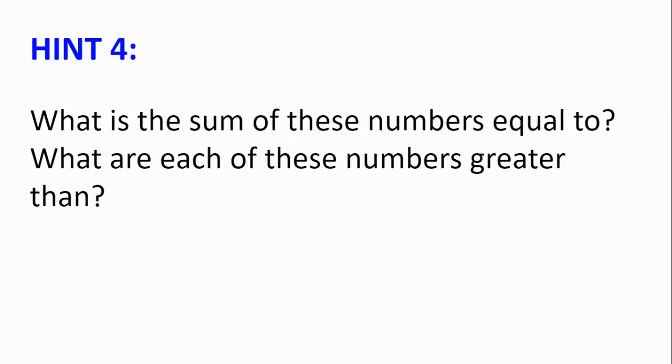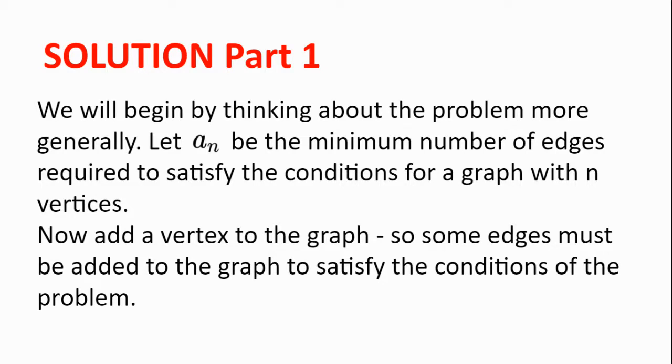Hint number 4. What is the sum of these numbers equal to? What are each of these numbers greater than? Solution. We will begin by thinking about the problem more generally. Let a_n be the minimum number of edges required to satisfy the conditions for a graph with n vertices. Now let's add a vertex to the graph, and so some edges must also be added to the graph to satisfy the conditions of the problem.